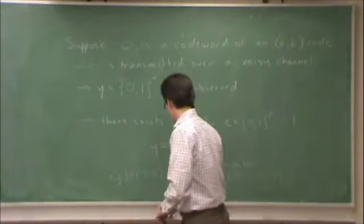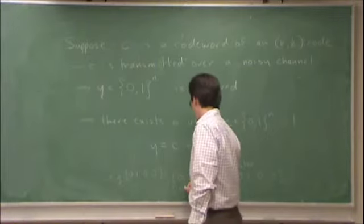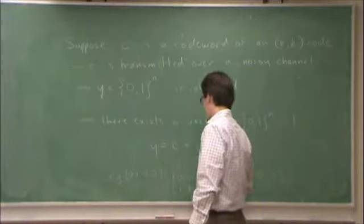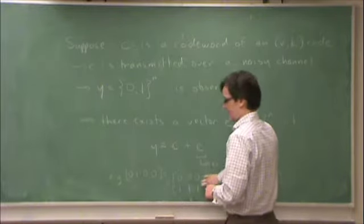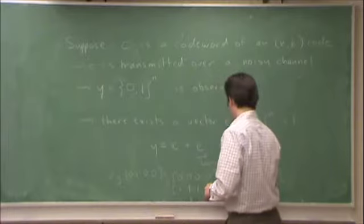Similarly, in our single parity check code, the all one vector is valid. It's not valid in every code. The all zero is valid in every code, in every linear block code, but not the all one.